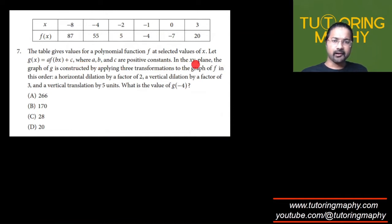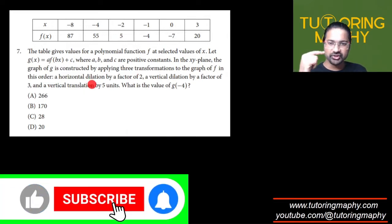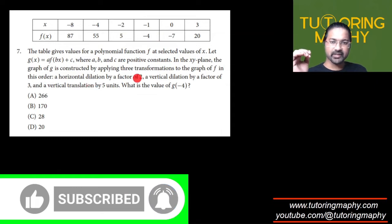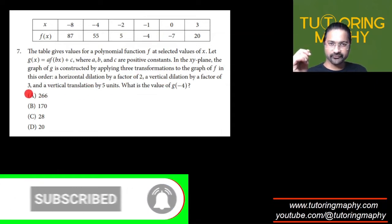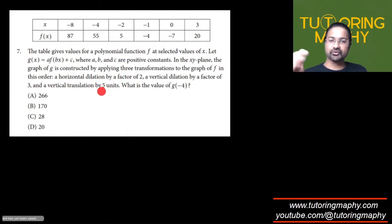In the xy plane the graph of g is constructed by applying three transformations to the graph of f in this order. A horizontal dilation by a factor of two. A vertical dilation by a factor of three and a vertical translation by five units.